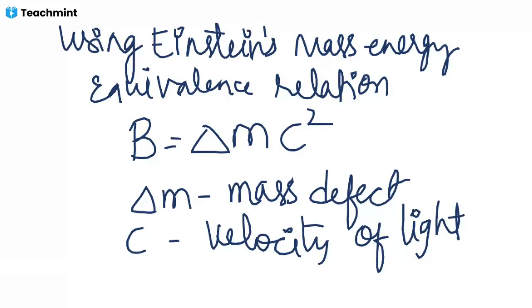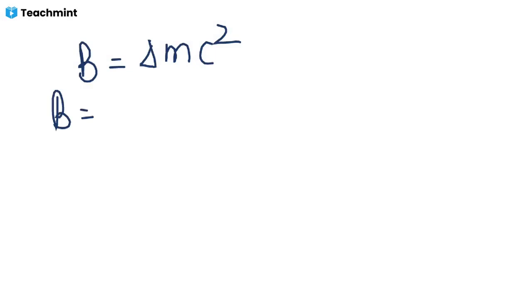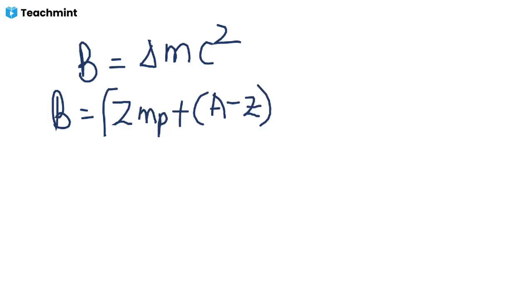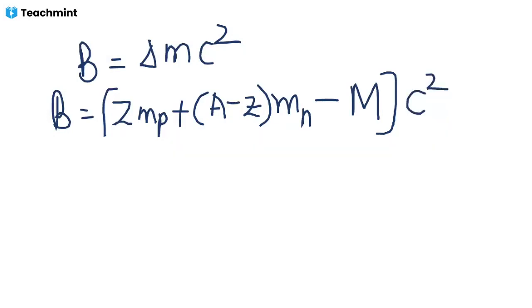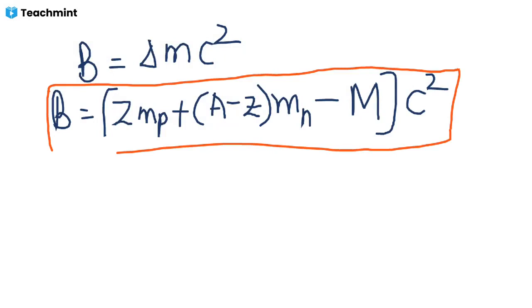So the binding energy of the nucleus is given by: binding energy equals delta M times c squared, which expands to: Z times Mp plus (A minus Z) times Mn, minus capital M, all multiplied by c squared. This is the formula for binding energy of the nucleus. If we supply this much energy to any nucleus, we can separate the nucleons from it.